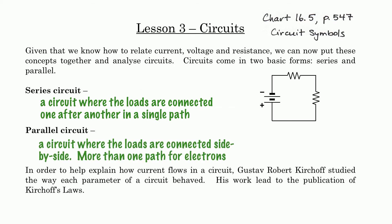A parallel circuit, as opposed to a series circuit, is a circuit where the loads are connected side by side. So there's more than one path for electrons to take. This would be an example of a parallel circuit, where we have the side-by-side configuration of these resistors. When electrons get to this junction or node, they have two different paths they can take — down to one resistor, or down to another. This means that series and parallel circuits have different characteristics.